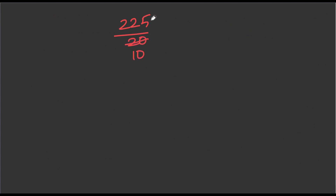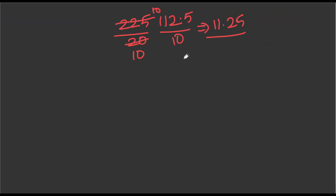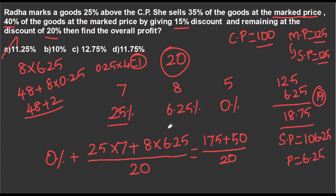So 225 divided by 20: 2 is 10, 15 gives 2 remainder 1, so that's 11.25. This value is 11.25, which is positive, so 11.25% is profit. So this sum works like this. If you approach it using deviation, it will be easy to solve in 60 seconds. If you practice, it will be very easy — you can understand deviation and apply the correct concepts.